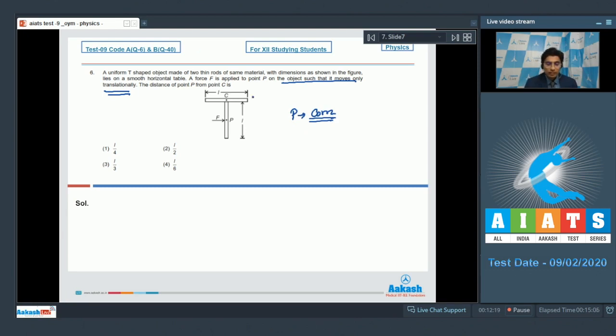Let the mass of the horizontal rod be M, then the mass of the lower vertical rod will be M as well. We can write down the location of center of mass from point C as M into 0 for the horizontal rod plus M into L by 2 for the vertical downward rod divided by M plus M.